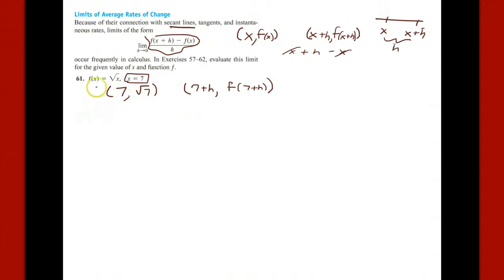These two points here—call this point P, call this point Q. We'll take the slope of line PQ, which is f(7+h) - f(7), all over h. Here's f(7), and f(7+h), that's going to be the square root of 7+h.